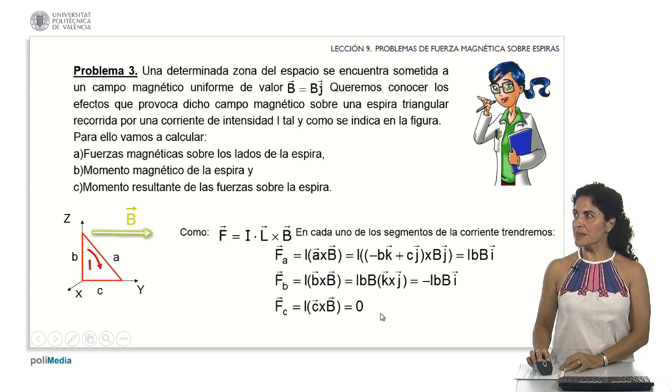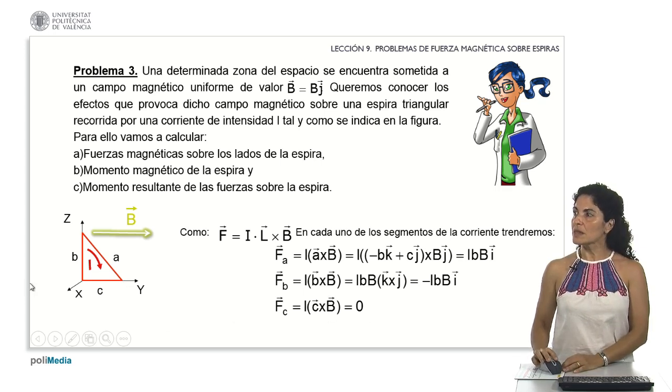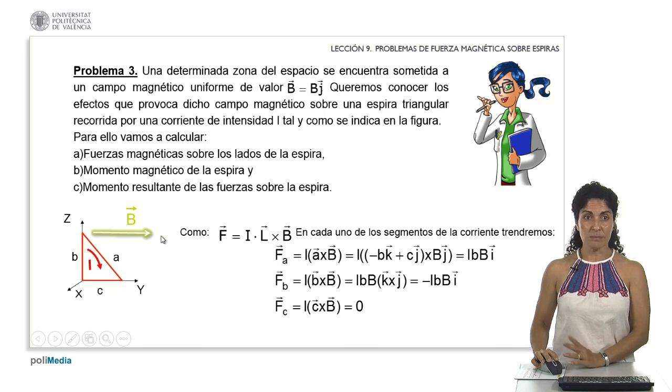Let's examine segment C closely. What happens there? Why is there no force acting on C? It's logical. The vectors representing C and B are parallel. With parallel vectors, the sine of the angle between them becomes zero, resulting in no magnetic contribution.